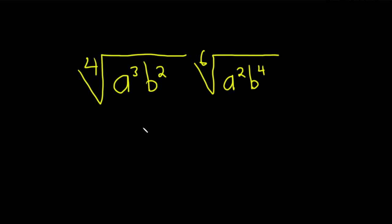And so to do this we want to write these with radicals of the same order. So we're going to use the least common multiple of four and six which is 12. So let's go ahead and just jump into it.